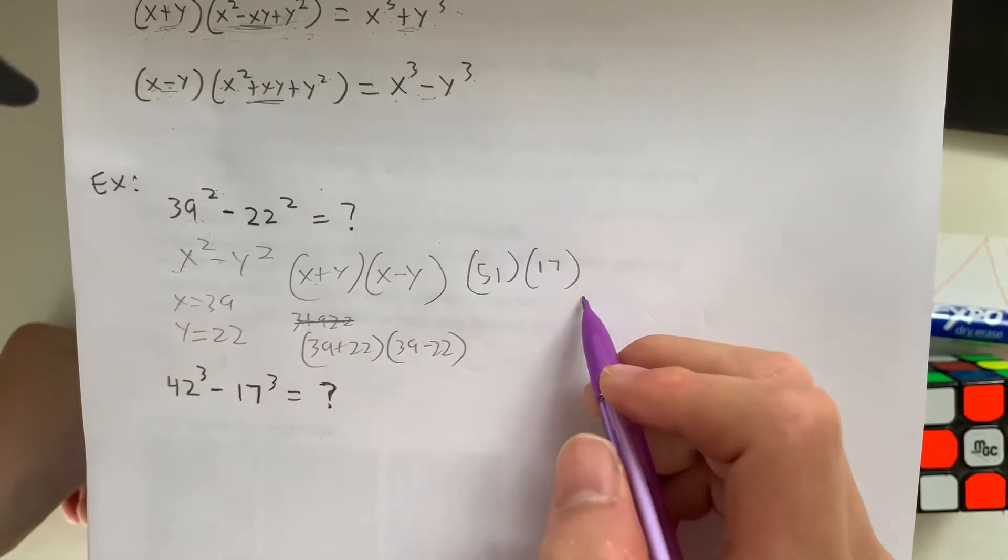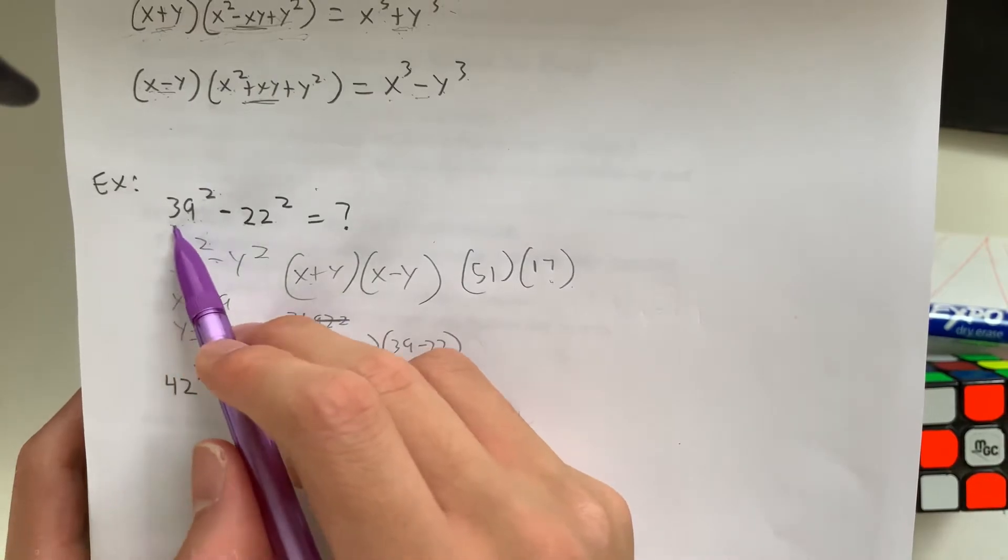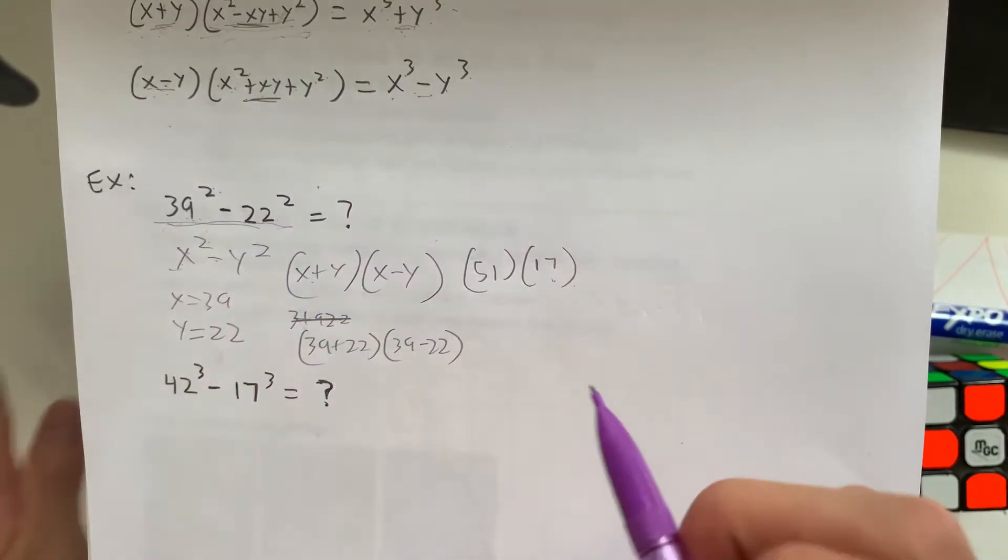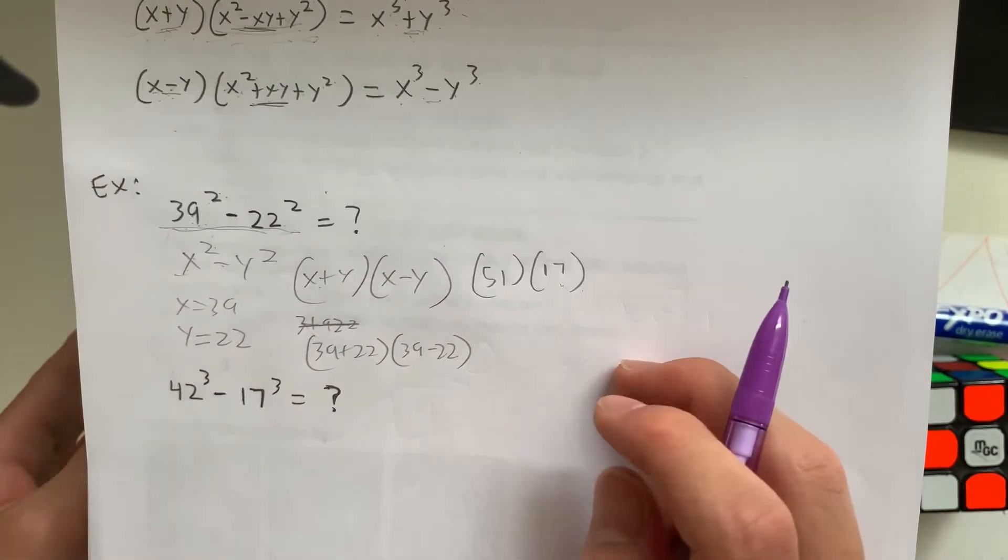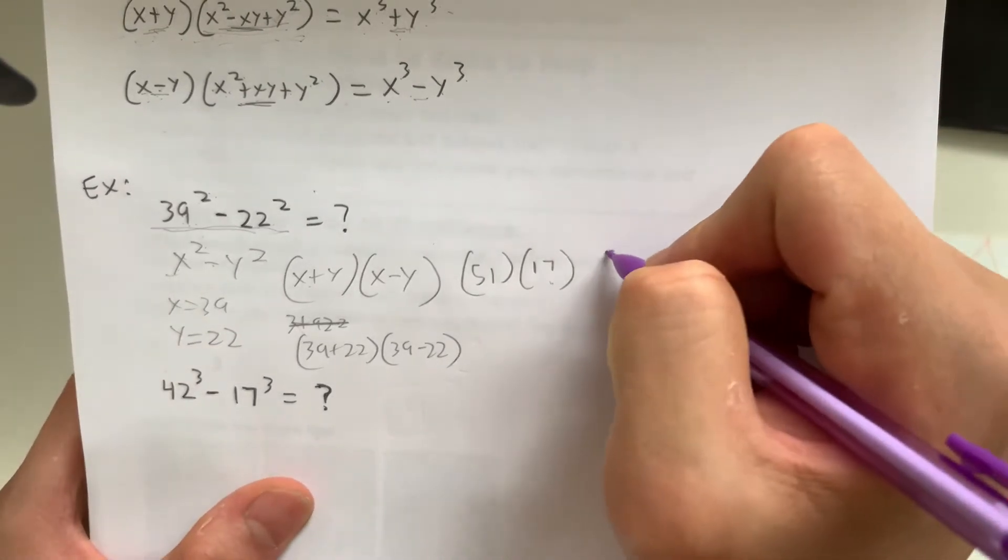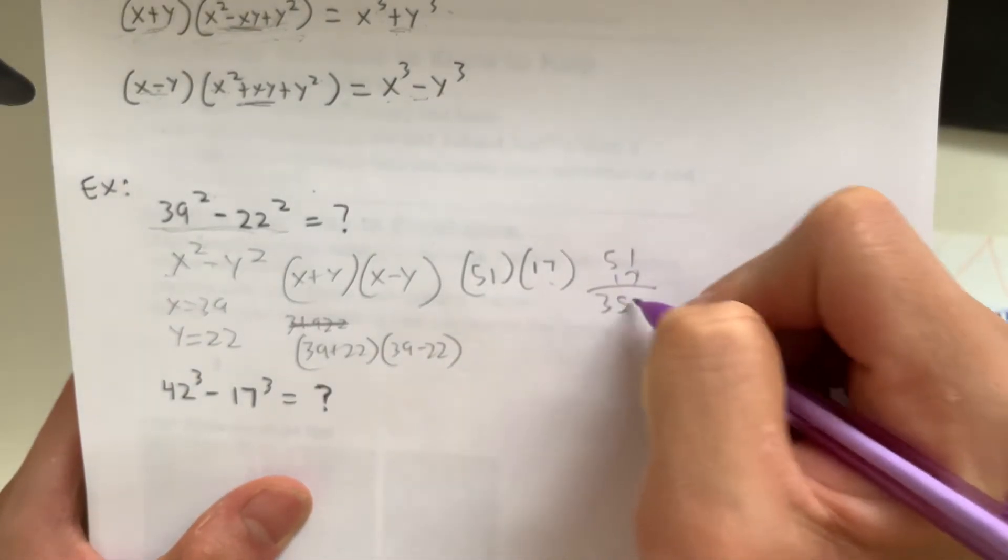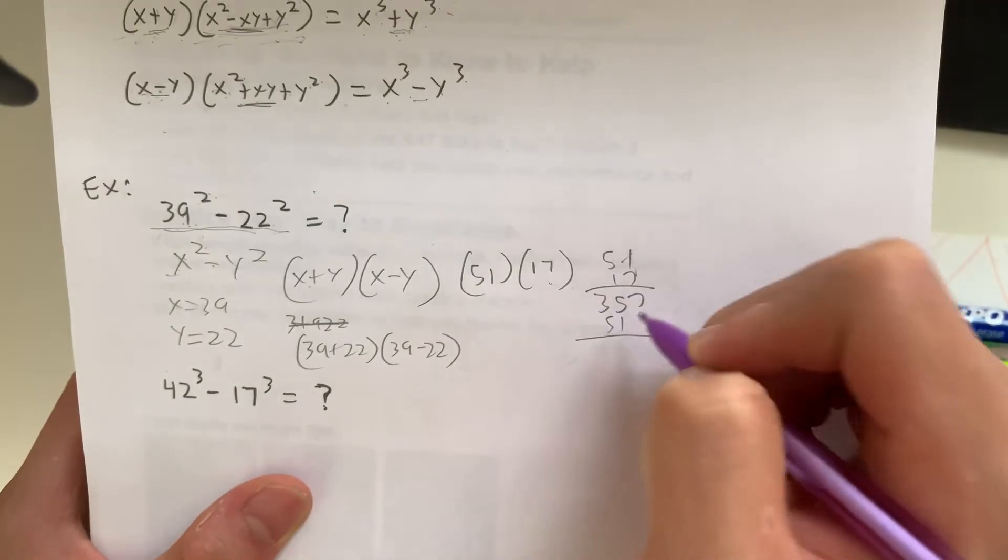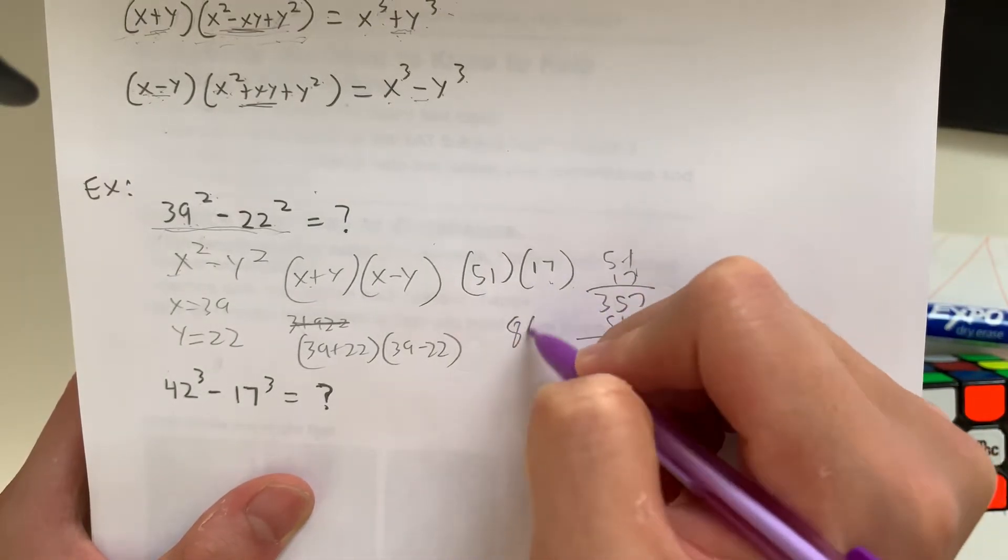Although this doesn't look easier, it is a better way of doing this because sometimes the numbers might be smaller and you don't have to multiply out. But in this case, you're going to have to do the long way. That's 35, 7, 1, 5, giving us an answer of 867.